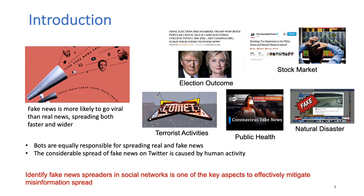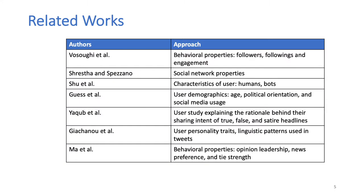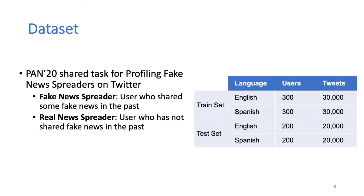Thus, being able to identify fake news spreaders in social networks is one of the key aspects to effectively mitigate misinformation spread. Several studies have been conducted to understand the characteristics of regular users that correlate with fake news spreading behavior in social networks using different behavioral as well as linguistic properties. We carried out our experiments to identify fake news spreaders using the dataset provided by the PAN shared task for profiling fake news spreaders on Twitter.